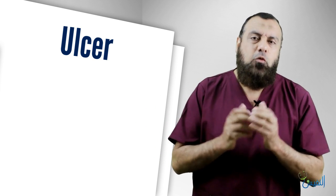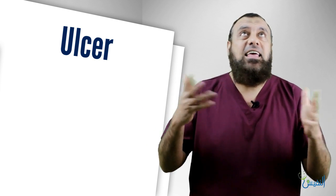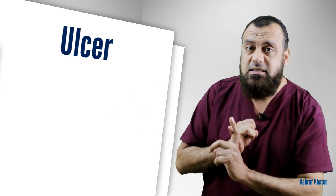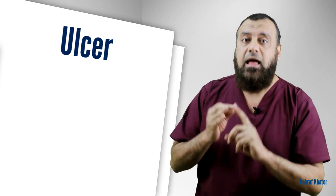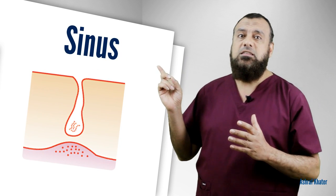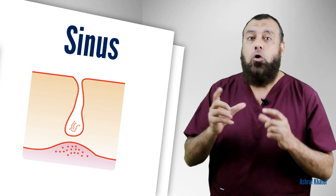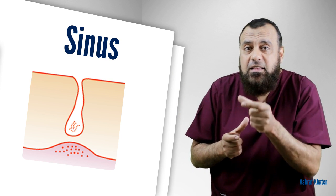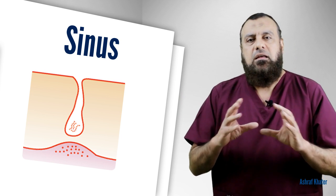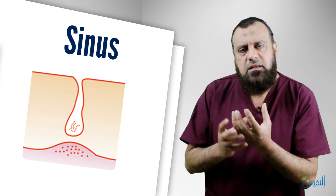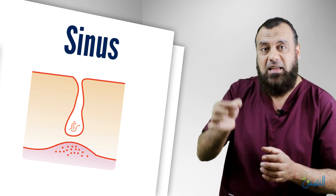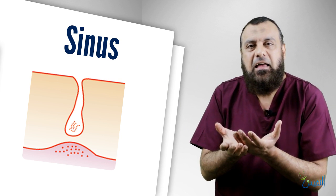What's the meaning of ulcer? First, what's the difference between sinus, fistula, and ulcer? A sinus is an opening communicating into a blind cavity filled with pus — for example, an abscess that has pointed and opened, creating a track into a blind abscess cavity.